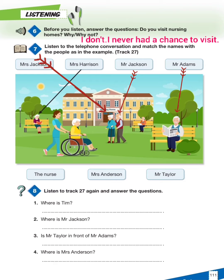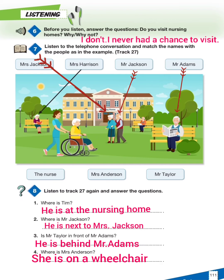They are walking. Mr. Adams is reading his newspaper. Where is he? He is sitting on the bench in front of the big tree. Mr. Taylor is at the bench behind Mr. Adams.